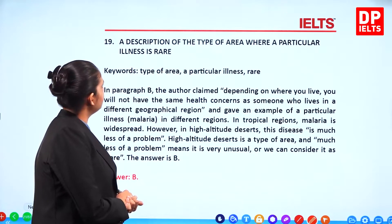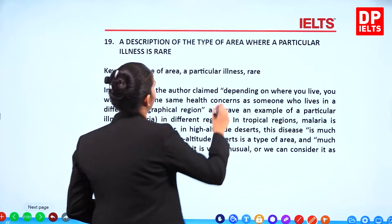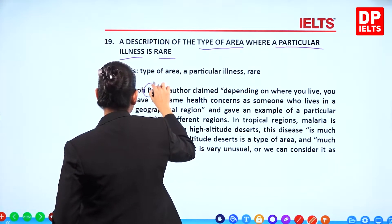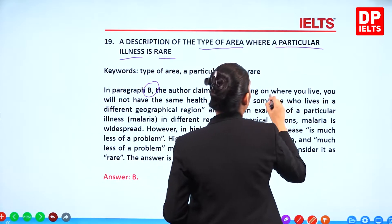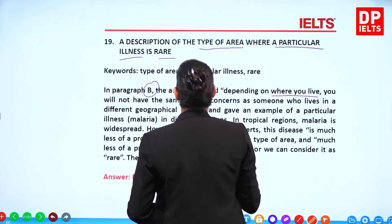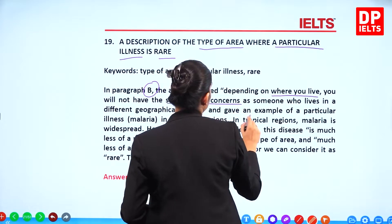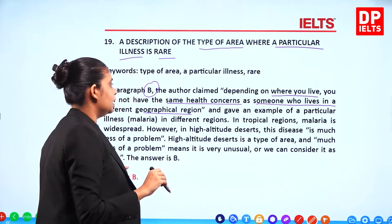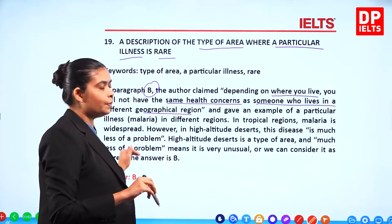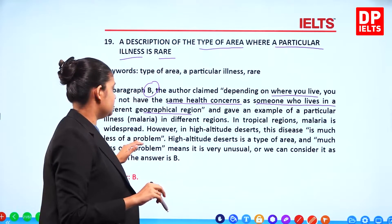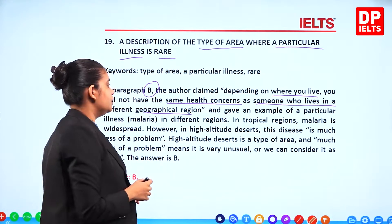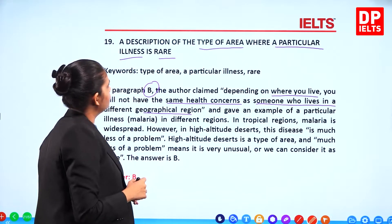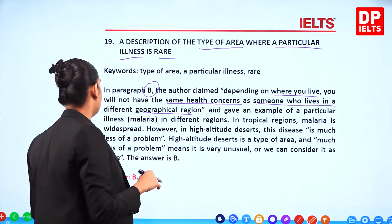Question 19 — a description of the type of area where a particular illness is rare. In Paragraph B, the author says depending on where you live, you will not have the same health concerns as someone in a different geographical region. The example given is: in tropical regions malaria is widespread, however in high altitude areas the disease is much less of a problem. So the answer is B.